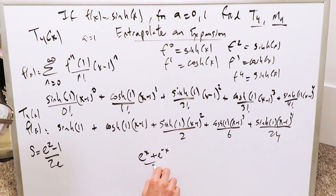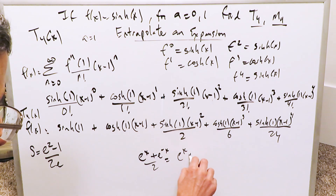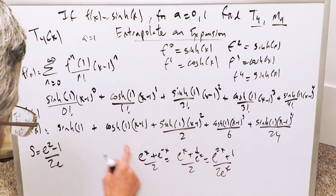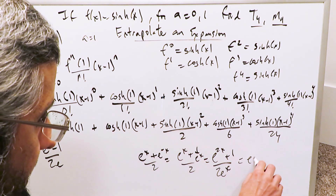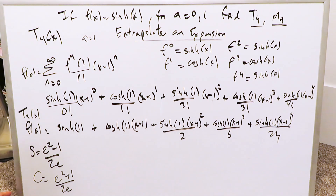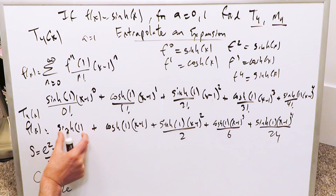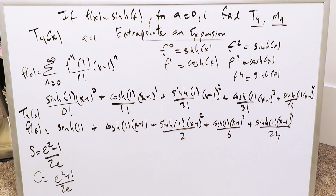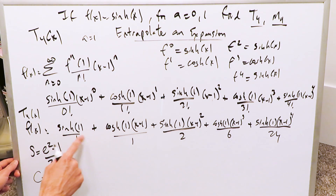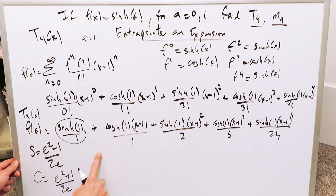Now let's do the same for hyperbolic cosine. Wherever I have hyperbolic cosine, it's e to the x plus e to the minus x over 2. Doing the algebra gives e to the 2x plus 1, divided by 2e to the x. With x equals 1, that gives e squared plus 1 over 2e. So wherever I have a hyperbolic cosine evaluated at 1, I'll use e squared plus 1 over 2e.